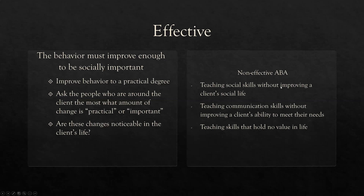Non-effective ABA examples: teaching social skills without improving a client's social life — we see this all the time in the autism community, where we teach social skills but the client still can't make friends. Teaching communication skills without improving a client's ability to meet their needs — great, they can use PECS in the clinical setting, but if they don't use it at home, who cares? It's not effective. And teaching skills that hold no value in life — we need to be cognizant of whether we're truly changing behavior enough to matter.